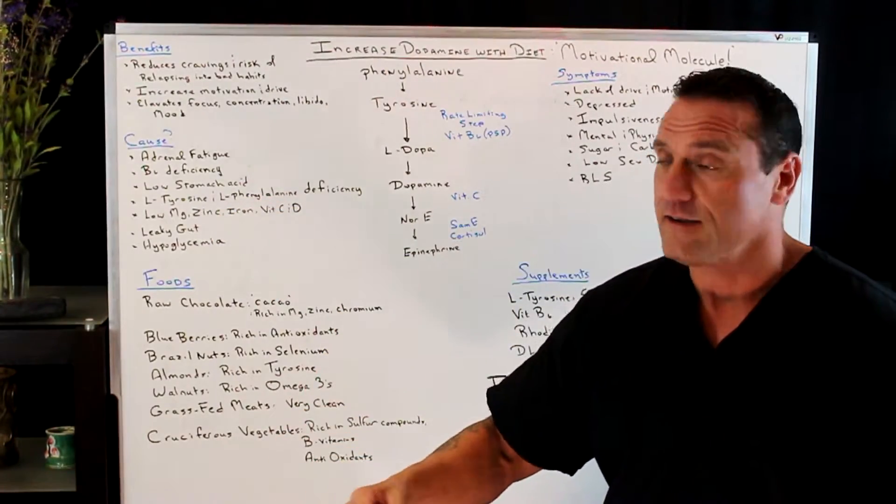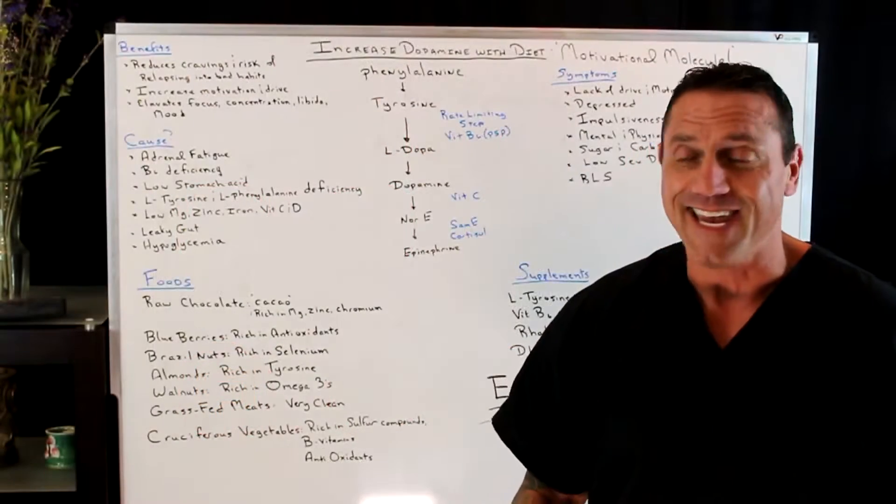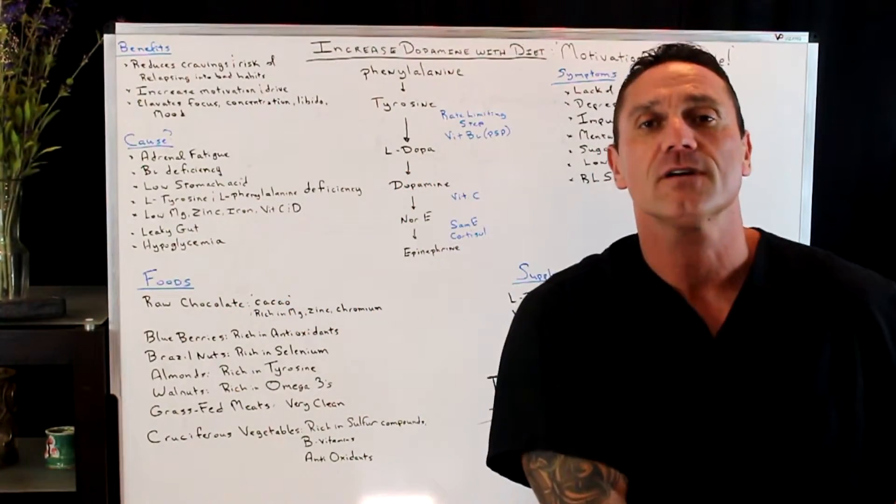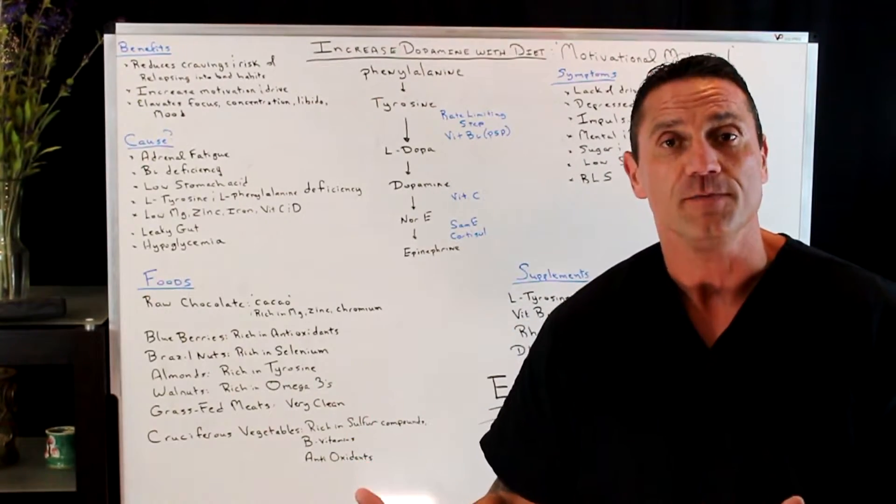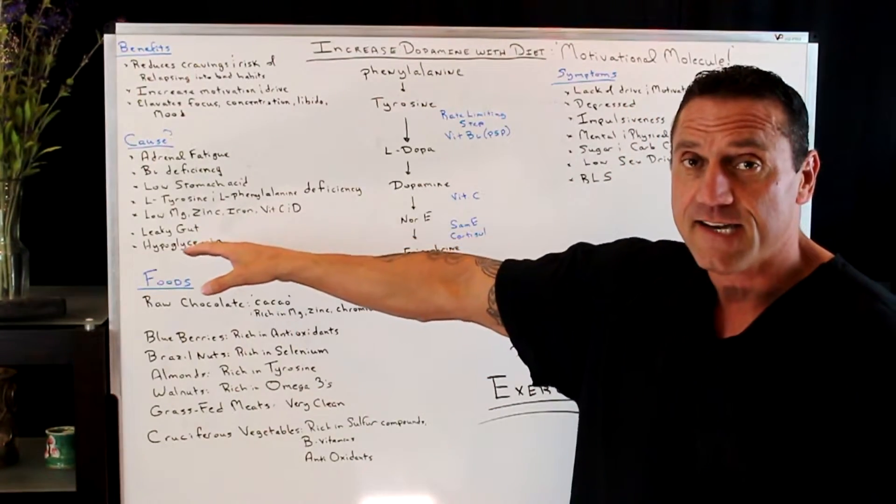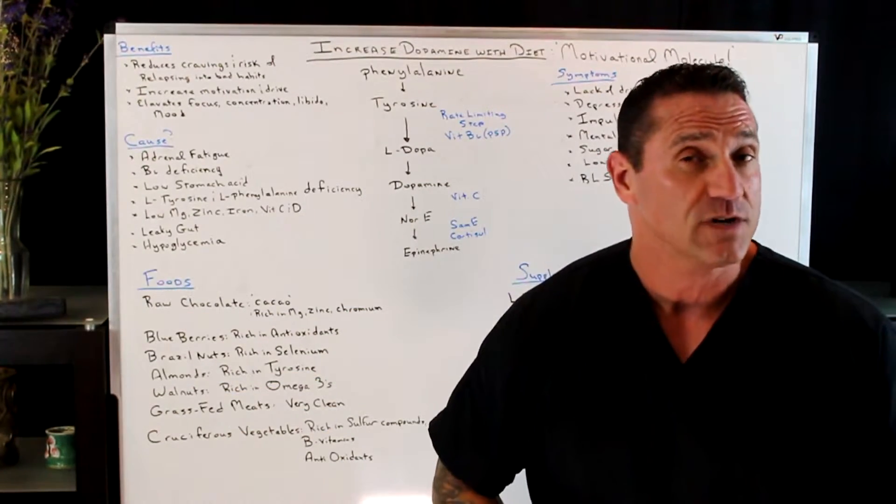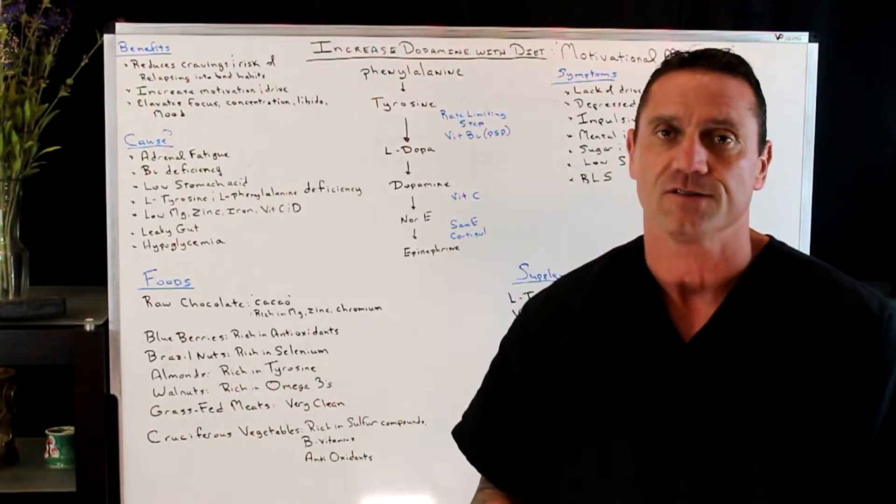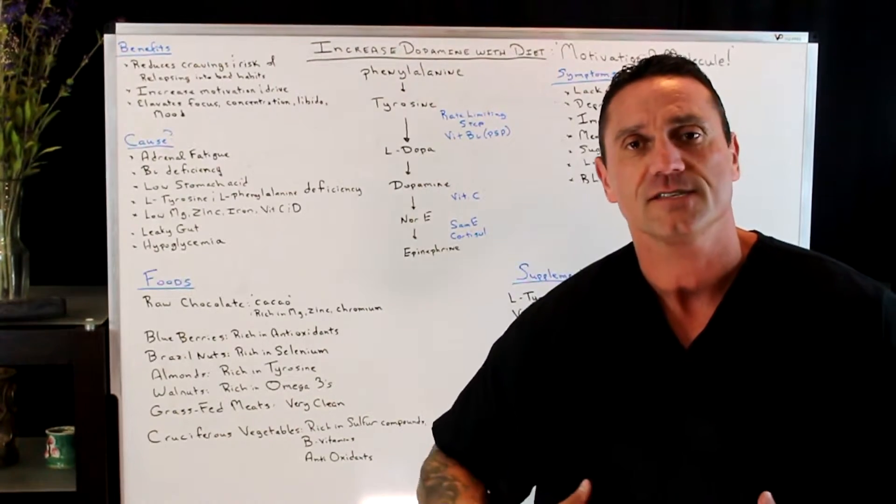You may be just low in L-tyrosine. You may be low in L-phenylalanine deficiency. You may be low in magnesium, zinc, iron, vitamin C, vitamin D. These are all needed for proper absorption and proper formation of dopamine. You may have a leaky gut. Remember, everything starts in the gut. If you have poor digestion, you're not breaking down these food products properly to absorb, to make all these hormones, whether it be dopamine, whether it be serotonin. It all starts in the gut.